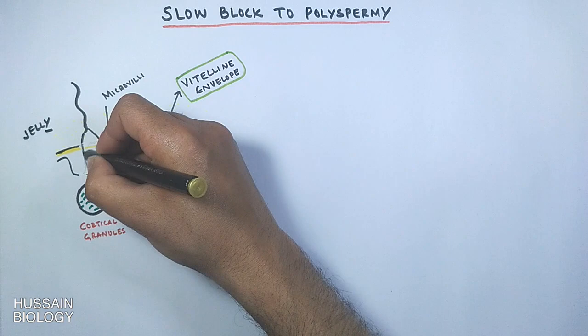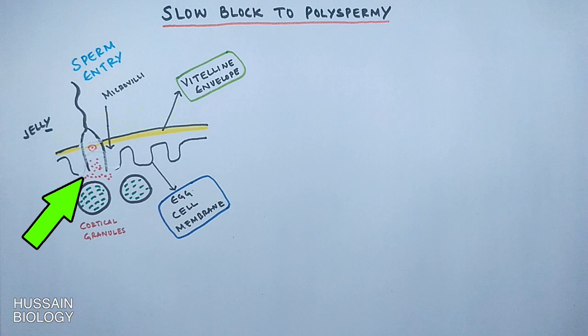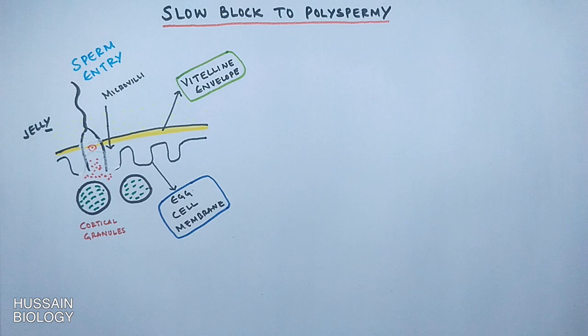When the first successful sperm gets through these barriers by launching the acrosomal reaction, the fast block to polyspermy comes into play, which we have already discussed in the previous video. The electrical block to polyspermy gradually vanishes, and then comes the slow block to polyspermy — that is the permanent solution to block polyspermy.